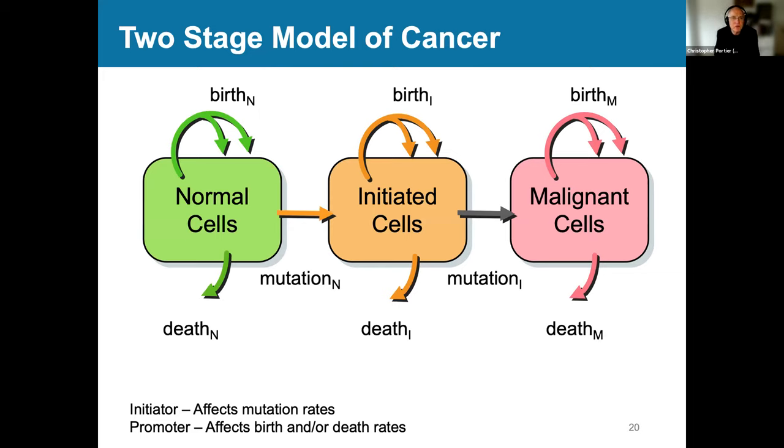If we look at cancer, this is a two-stage model of cancer. Here you have normal cells. They get mutated, become initiated cells. They get mutated again, can become malignant cells, and that leads to a tumor. All of the cells are going through replication. Some of them die. There are two types of basic chemical concepts in this, what's called initiation and promotion. Initiators affect that first mutation rate or that second mutation rate. And promoters affect the birth or death rates of the initiated cells or the malignant cells.